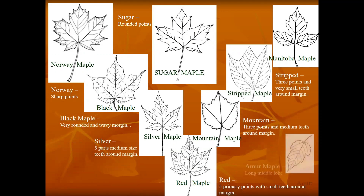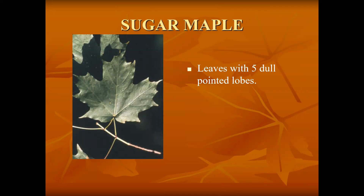Sugar maple and Norway maple are quite similar; Norway has sharp points. Black maple looks like a sugar maple but with very soft edges. Silver maple has five parts and larger teeth all around it. Red maple has five lobes and teeth all around it. Mountain maple has three main sections, often two other sections near the bottom. Striped maple has three sections. Manitoba maple is the only one that's compound. Amber maple has one long middle lobe. Sugar maple has five dull pointed lobes.